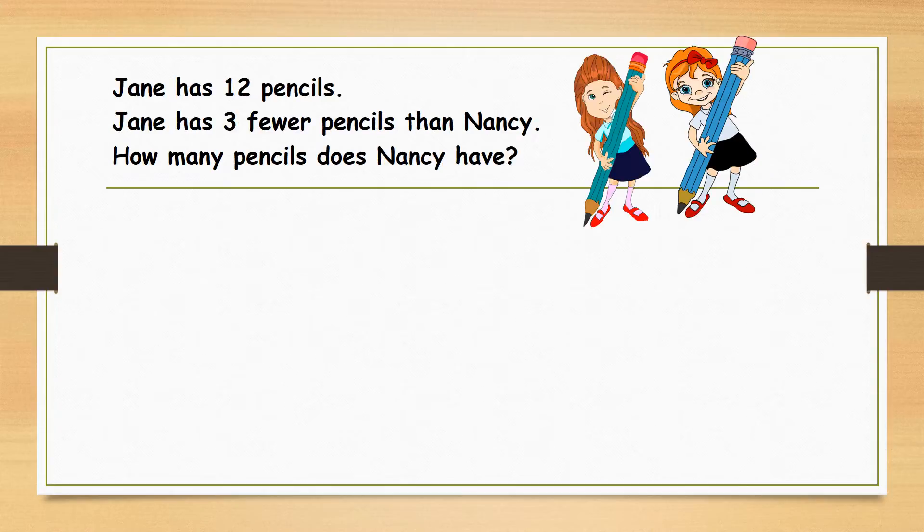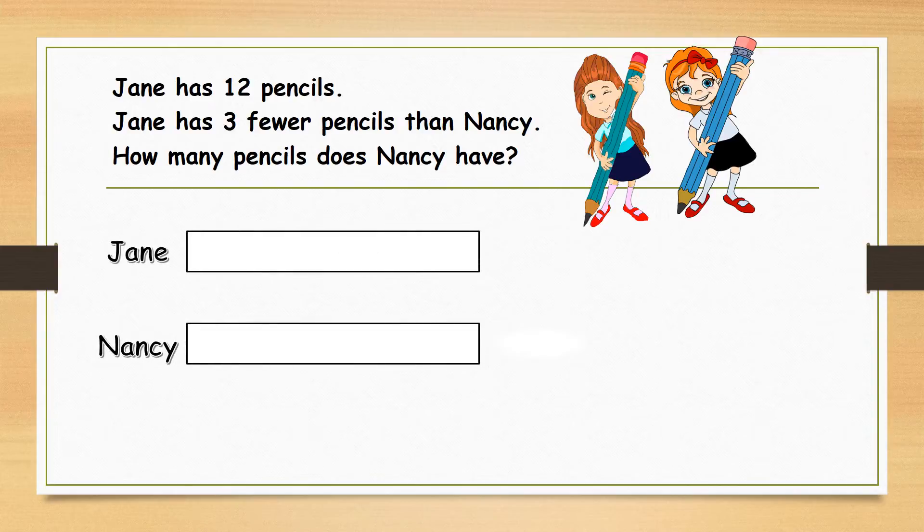Jane has 12 pencils. Jane has 3 fewer pencils than Nancy. How many pencils does Nancy have? Let's draw the model to show the relationship between the number of pencils Jane and Nancy have.